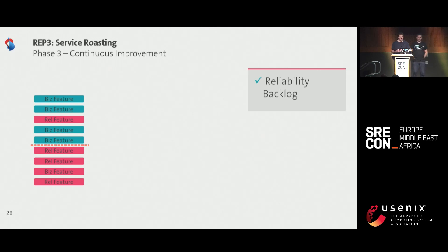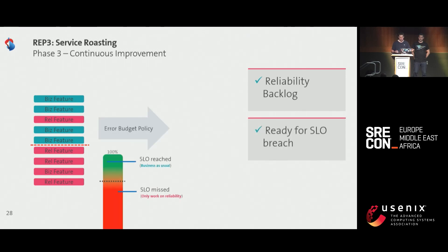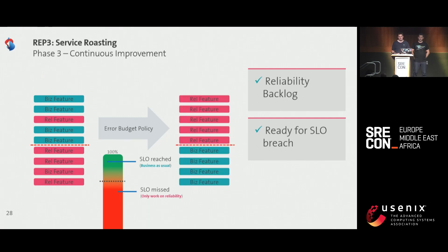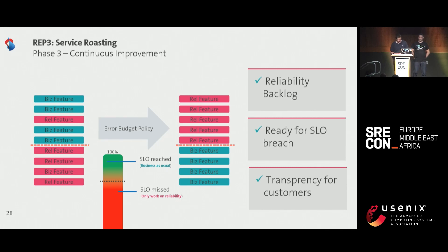With that, you create a classified list of risks that can also be used to compute the effects on SLOs. Third phase: continuous improvement. You define measures for the top risks, reliability features you want to add to your service, and these enter your backlog. Here's some magic: it fully fits with what we do with SLOs. If your error budget policy has to be activated, you know exactly what to do — prioritize those features. So with service roasting you also get ready to use SLOs correctly. It also creates a lot of transparency through the organization on what should be done to improve the service.